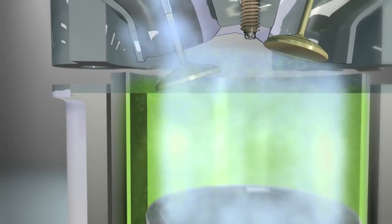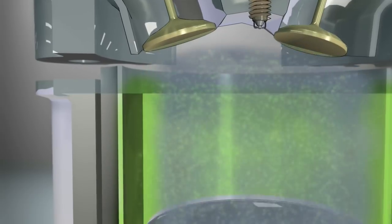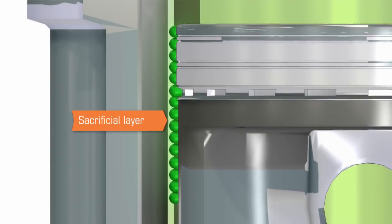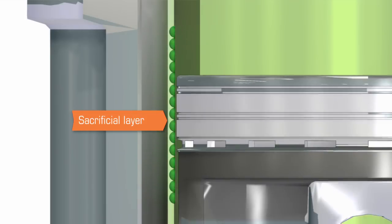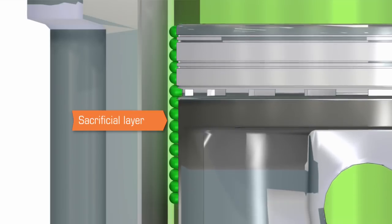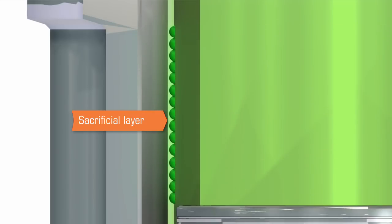Since friction modifiers are attracted to metal surfaces, they form a continuously replenished sacrificial layer of protective material. As the piston slides up and down the cylinder wall, a thin film of friction modifiers protects the metal surfaces, reducing wear and friction.